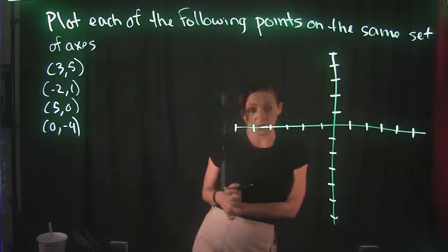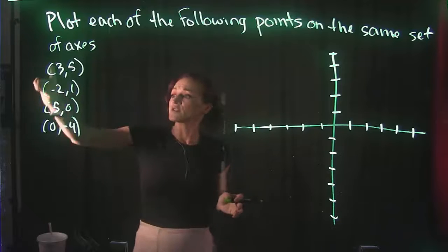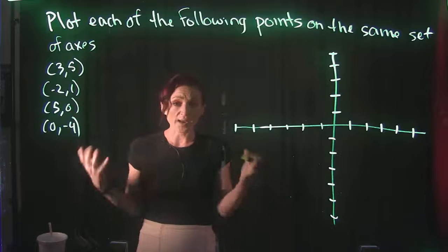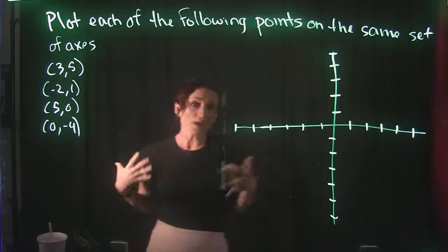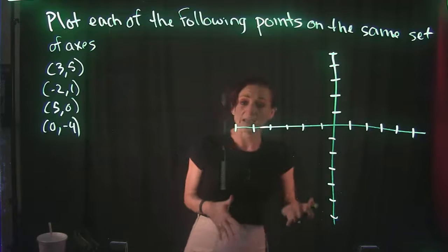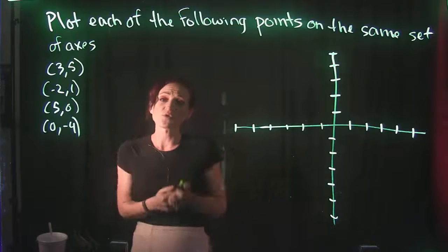So when it comes to plotting points, remember that we're going to take a look at the first number, which is our x value, and then we're going to take a look at the second number, which is our y coordinate. Whenever we plot a point, we need to take into consideration the x and the y. So we're going to be plotting both of them together.